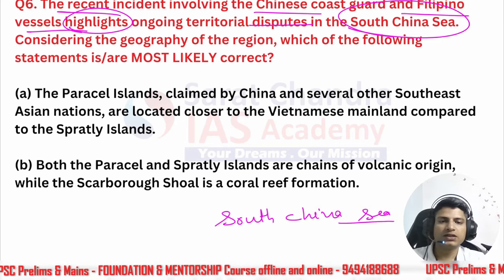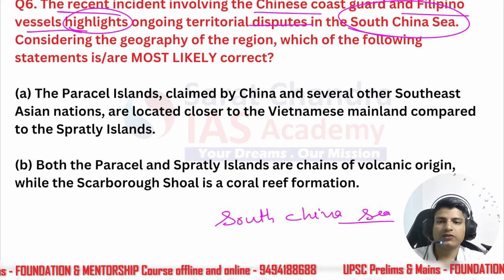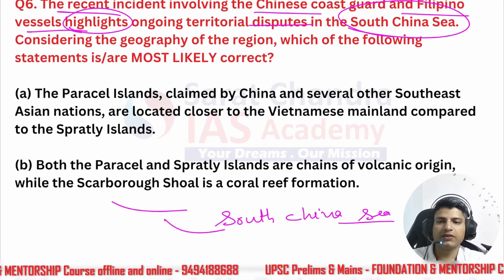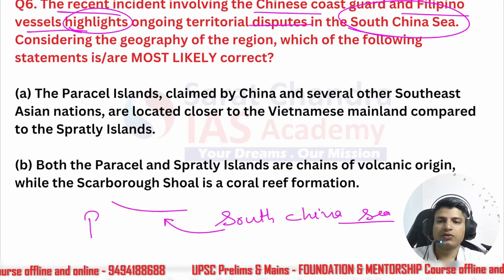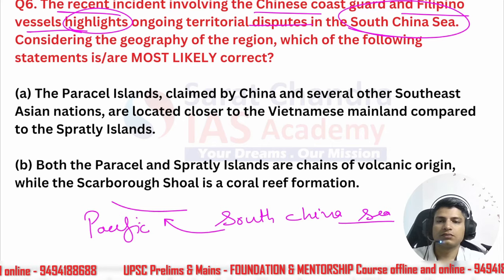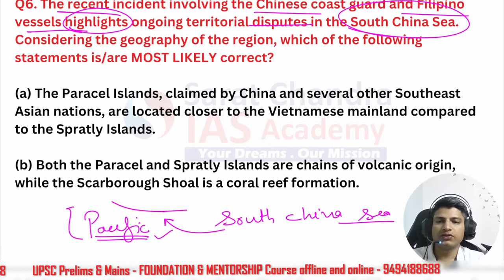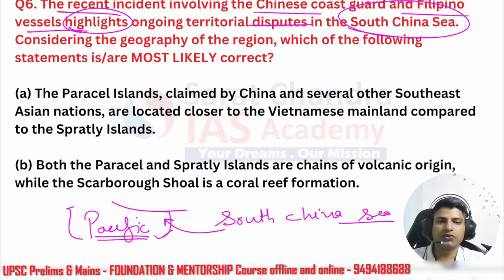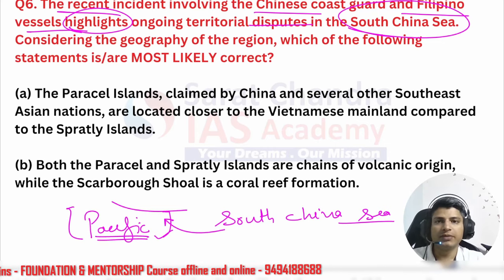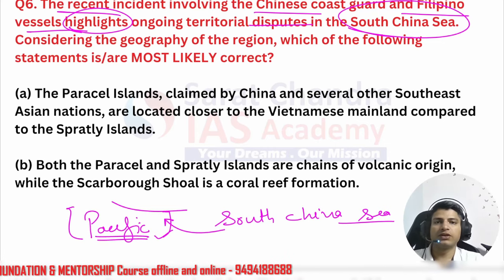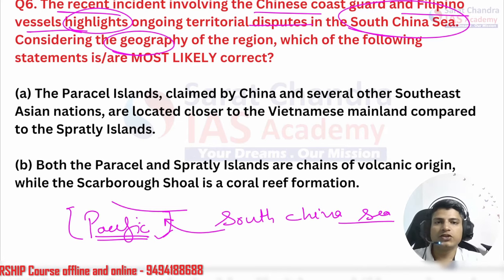Where is this sea located? In south of China — essentially coming from the name itself. This is a part of the Pacific Ocean, which is divided into various regional oceans — the Indian Ocean being one of them. In tomorrow's lecture we'll be reading about the Indian Ocean as well.